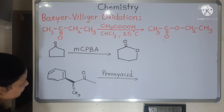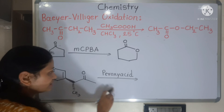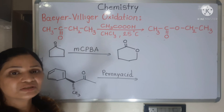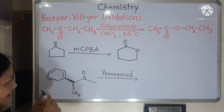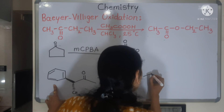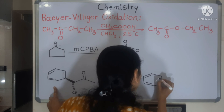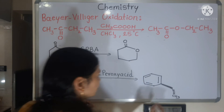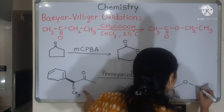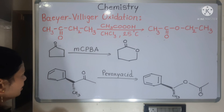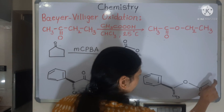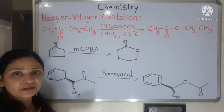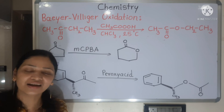Another example involves stereochemistry. When you do Baeyer-Villiger oxidation and insert oxygen next to the ketone on the bulkier side, it does not affect the stereochemistry — the stereochemistry of the product remains the same as the starting material. Count the carbons: 1, 2, 3, 4 on each side. Oxygen is inserted on the bulkier side, not the less hindered or plain side. That is all about Baeyer-Villiger oxidation reaction. Thank you.